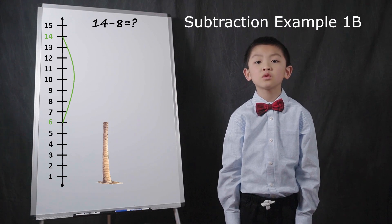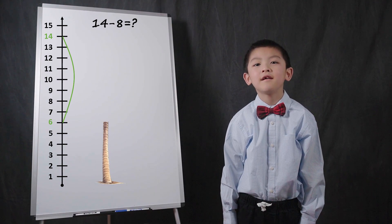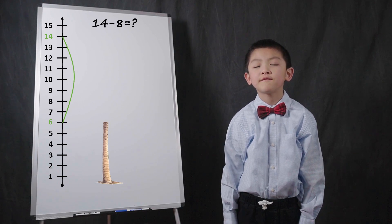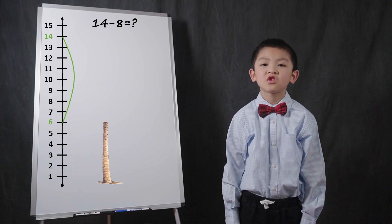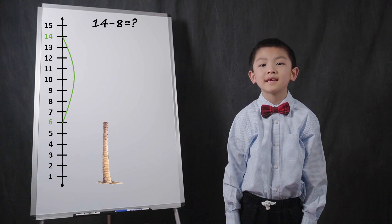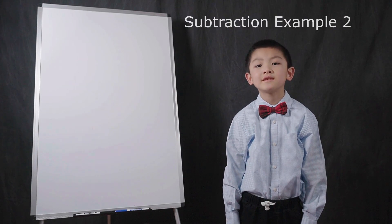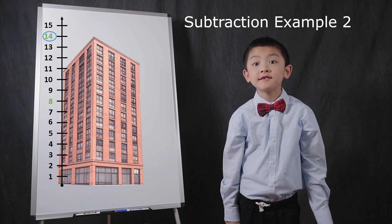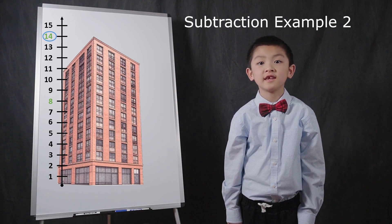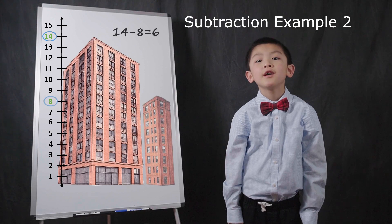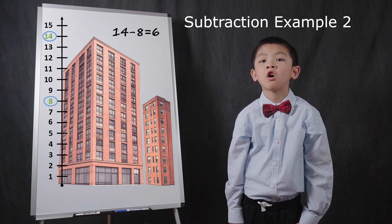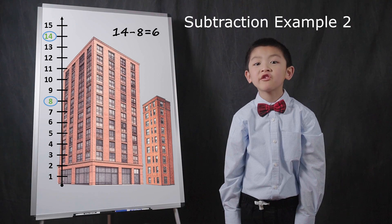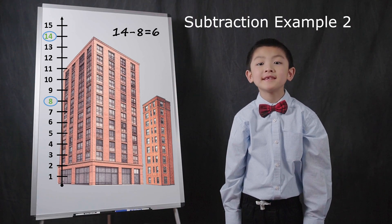14 minus 8 equals 6. The second method of using a number line for subtraction is like measuring the difference in length or height. Let's look at 14 minus 8 again. Instead of starting with 14 and removing 8 to get 6 left, I can think of this as comparing two objects like buildings. The first building is 14 meters tall, so circle 14 on the number line. Now imagine there is a second building that is 8 meters tall, so circle 8 on the number line. Then calculate the difference in height by counting up or down between 14 and 8. The difference is 6.